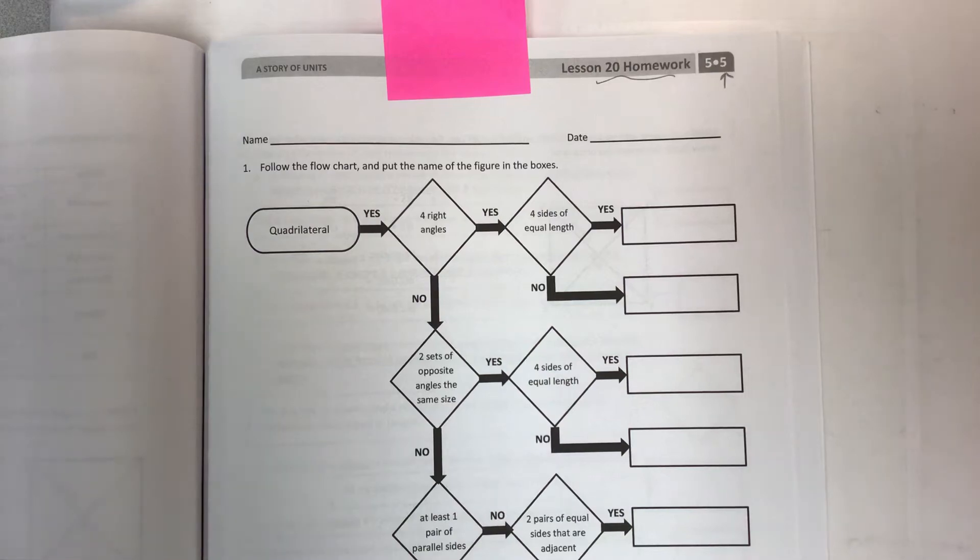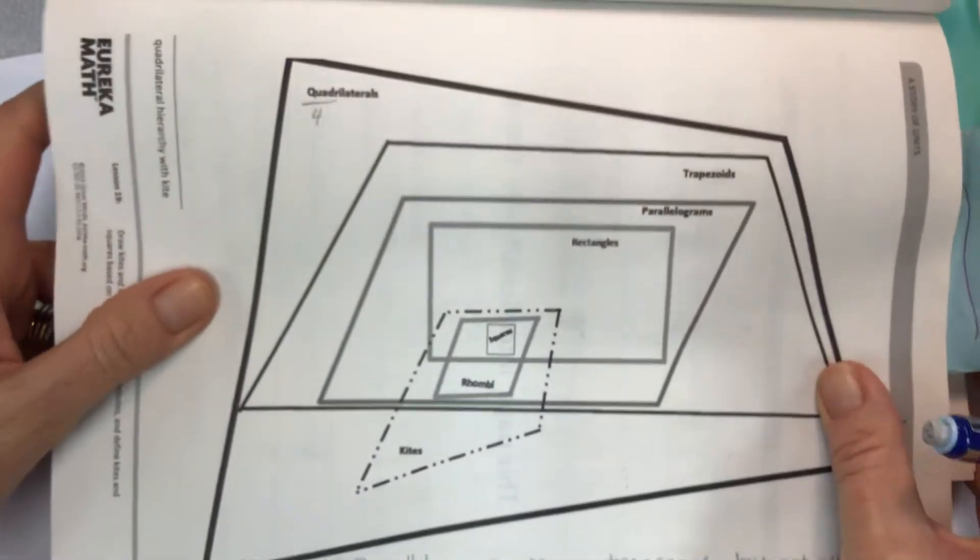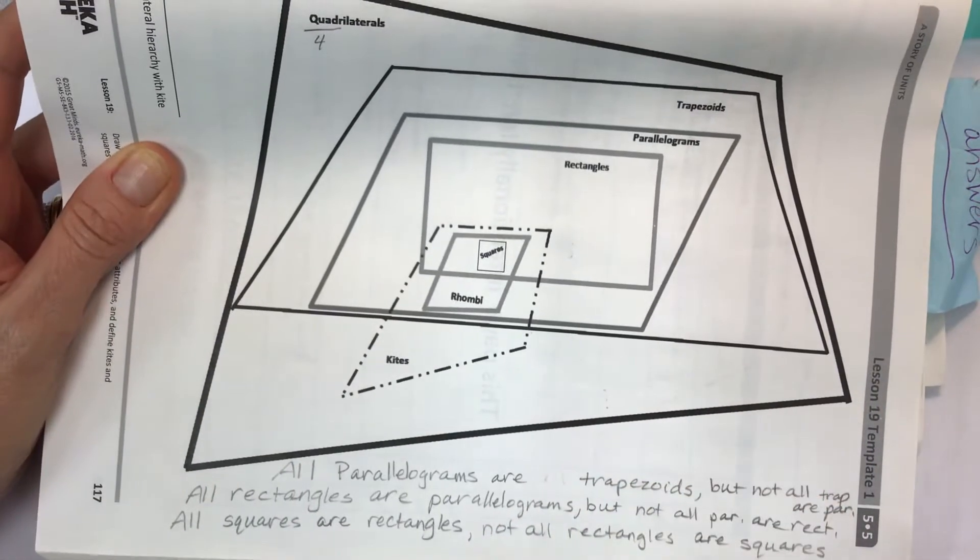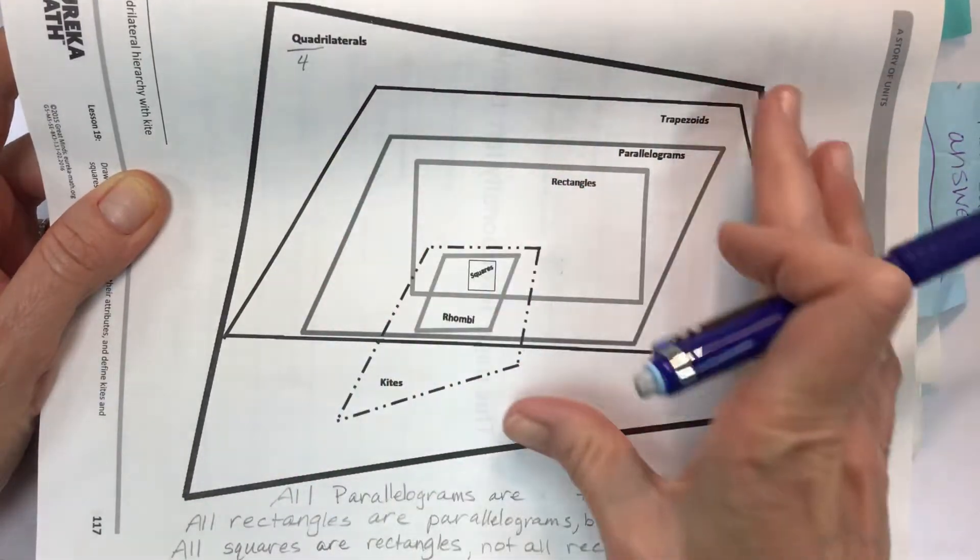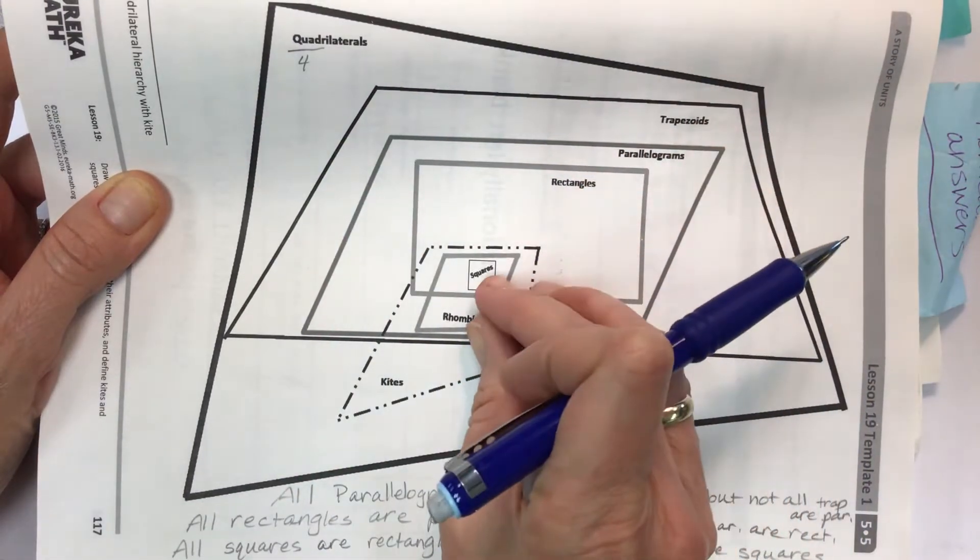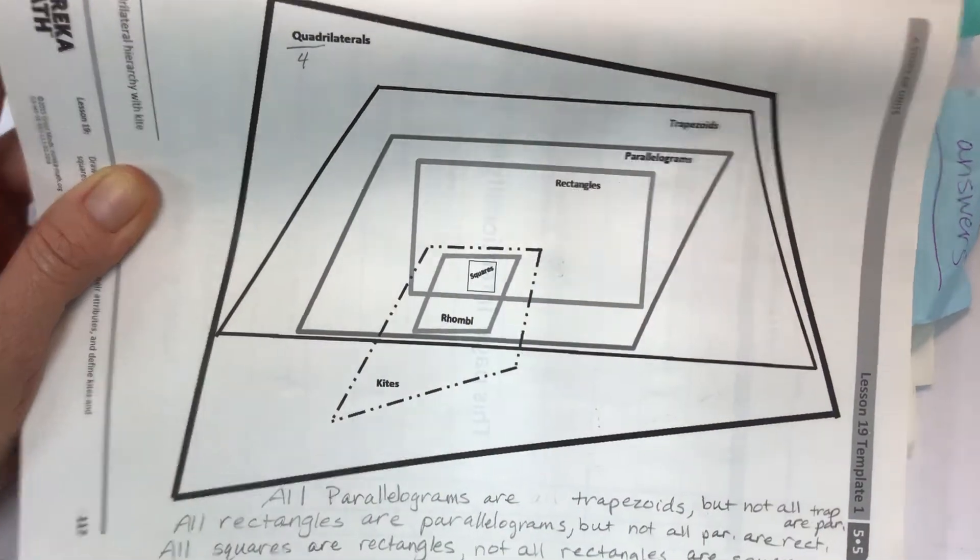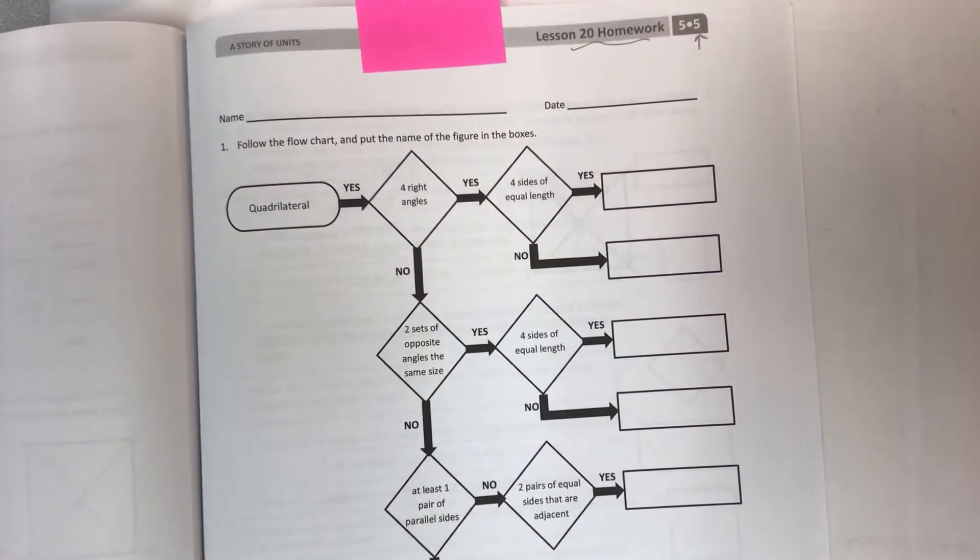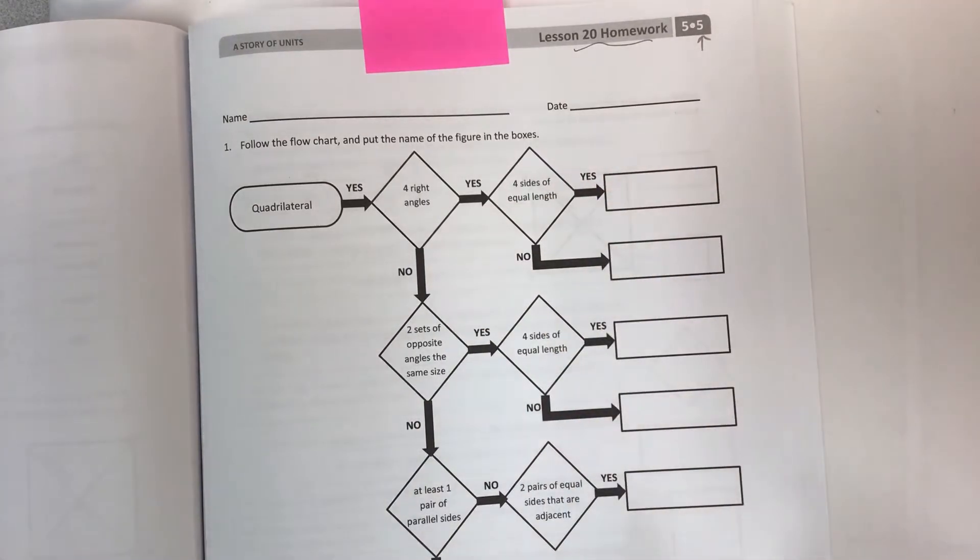Here we go, Module 5 Lesson 20. The objective here is to classify two-dimensional figures in a hierarchy based on properties. So the hierarchy, have it in front of you—it's from your problem set book. If you can keep it in front of you the whole time. This is what it looks like. It's got all the shapes that are quadrilaterals that we've been studying, and it narrows down the definitions so you can see all the attributes all lined up.